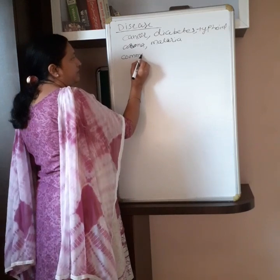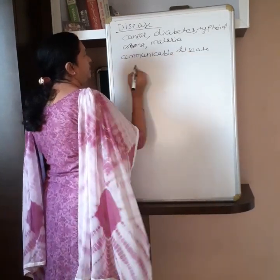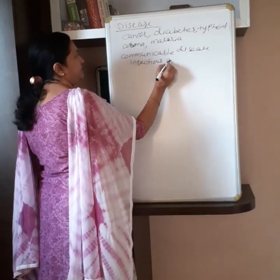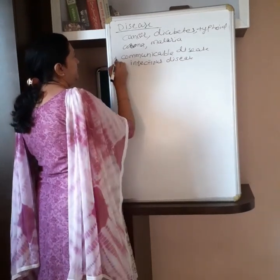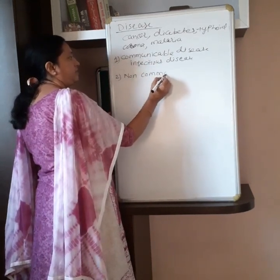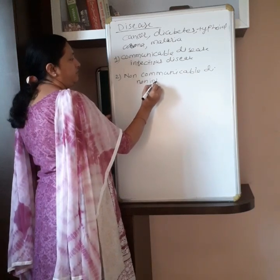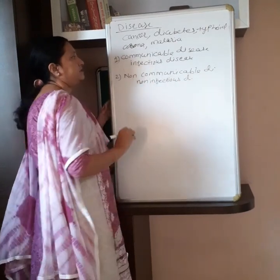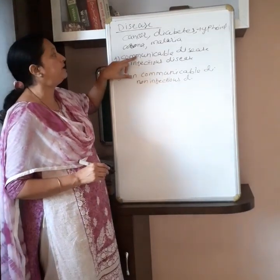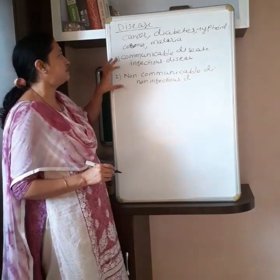The first type is communicable disease, also called as infectious disease. The second type is non-communicable disease, also called as non-infectious disease. So diseases are divided into two types: first is communicable or infectious disease, and second is non-communicable or non-infectious disease.